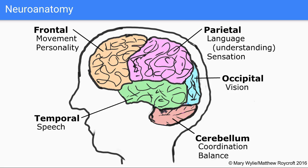The frontal lobe covers movement and personality. The parietal lobe covers language, understanding, and processing, as well as sensation. The temporal lobe covers speech, and the occipital lobe covers vision. A stroke can affect one area or a number, but the symptoms are related to what that part of the brain does.